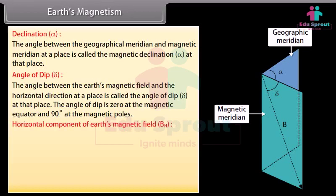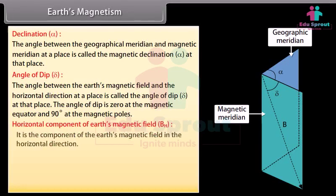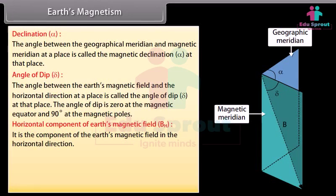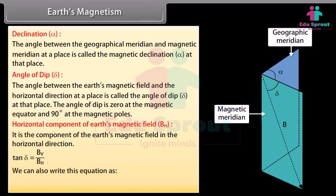Horizontal component of Earth's magnetic field BH: It is the component of the Earth's magnetic field in the horizontal direction. Tan delta equals BV divided by BH. We can also write this as B equals the square root of BH squared plus BV squared.